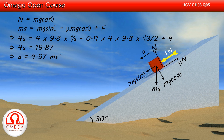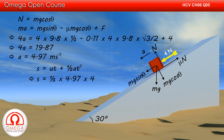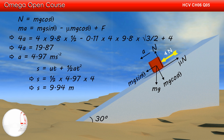From kinematics, we know that in uniformly accelerated motion, displacement is given by ut plus half at squared. Since the block starts from rest, the initial speed of the block is 0. Hence, displacement in 2 seconds is half into 4.97 into 4, that is 9.94 meters.